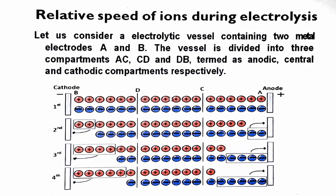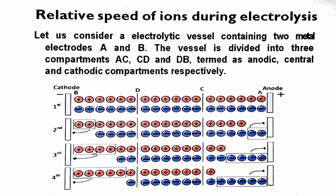In the first condition, before electrolysis is started, no ions are moving. In the second condition, when we apply potential, two cations move towards the cathode and two anions move towards the anode. In the third condition, four cations are moving towards the cathode and four anions will move towards the anode.